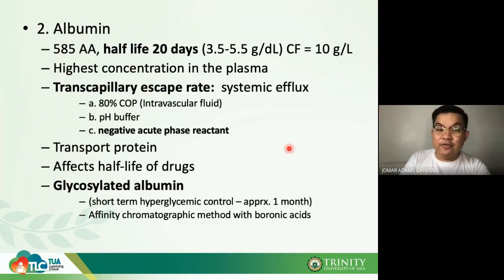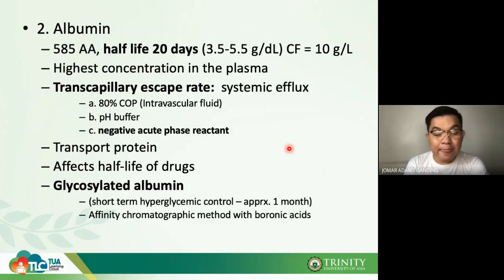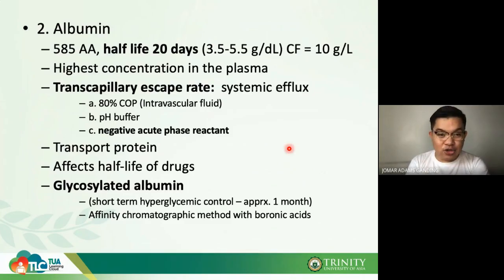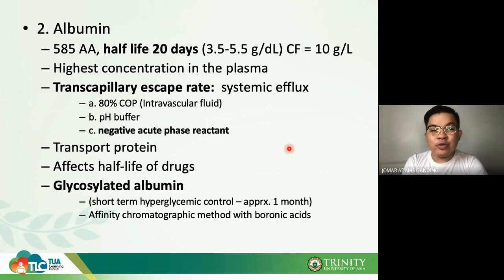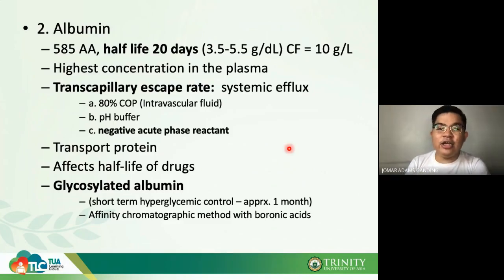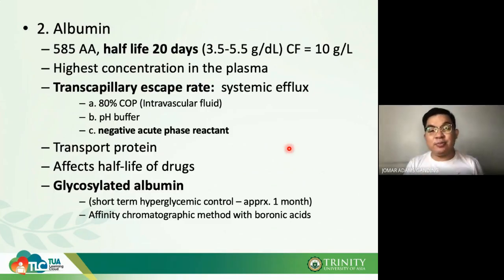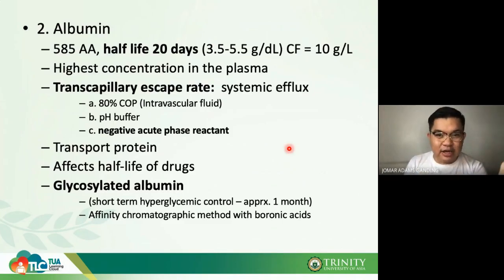Albumin is the general transport protein — it transports many things that cannot be transported freely in the plasma. Unlike specific transport proteins such as transferrin, haptoglobin, and hemopexin — which each carry specific molecules — albumin is non-selective and can transport any molecule.